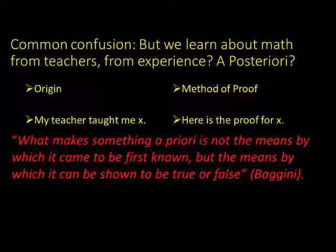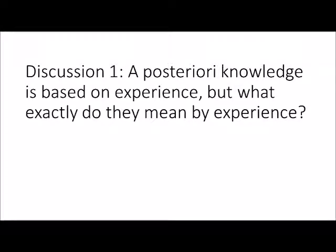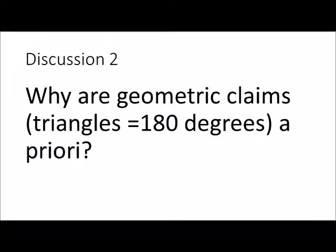For discussion: a posteriori knowledge is based on experience, but what exactly do we mean by experience — scientific experience, sensory experience, or something else? That's an area of controversy. Also, why are geometric claims like 'triangles have 180 degrees' a priori? One answer is that triangles are not real objects — they're idealized in the mind. We live in a three-dimensional world, but triangles are two-dimensional. Any three-dimensional object is vibrating and moving, but two-dimensional triangles in Euclidean geometry are perfect. So we can think of them and deduce their truths without observing triangular objects in the world.